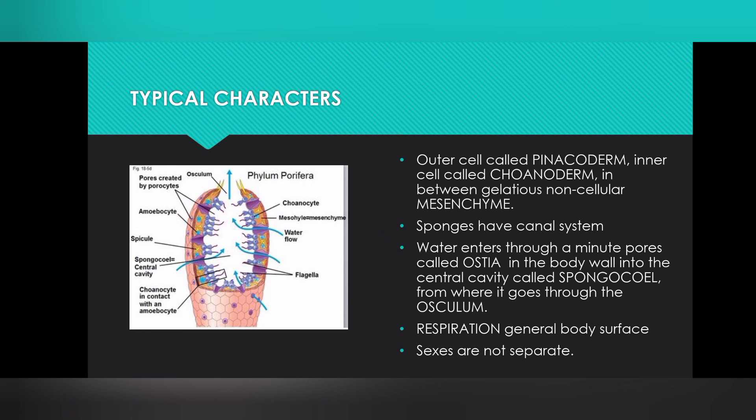They are called hermaphrodite. Sponges reproduce asexually by budding and sexually by formation of gametes. Fertilization is internal. Development is indirect.